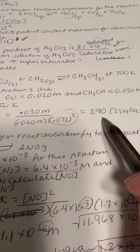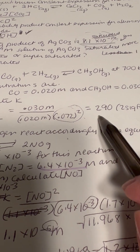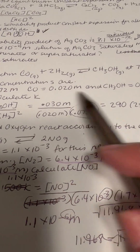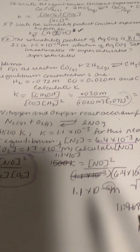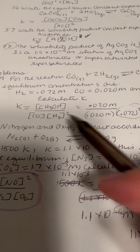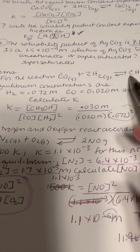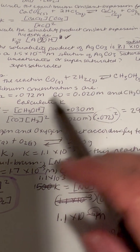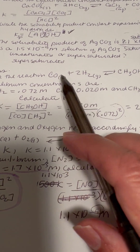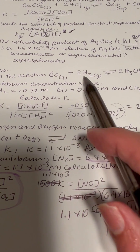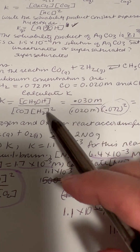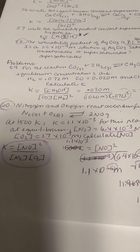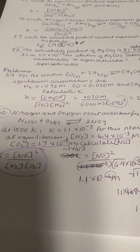They want the answer to 2 significant figures. I got 290 — go ahead and do this on your calculator and see if you get that. Basically the numerator is on top and the denominator includes H₂ with the exponent of 2.